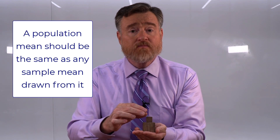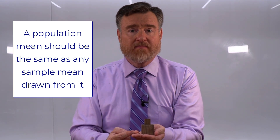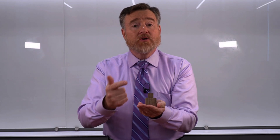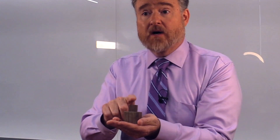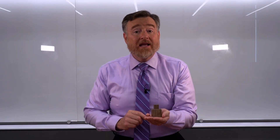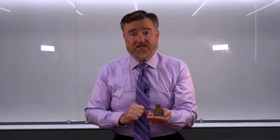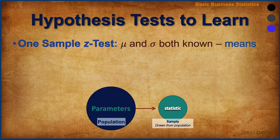If we don't know what the value is in the population, we could draw a sample, test it, and what is true of the sample should extrapolate back to the population. What is true of the sample should be true of the population from which it was drawn, and vice versa. With that basic idea in place, we're ready to discuss the three types of hypothesis tests we're going to learn about this week.